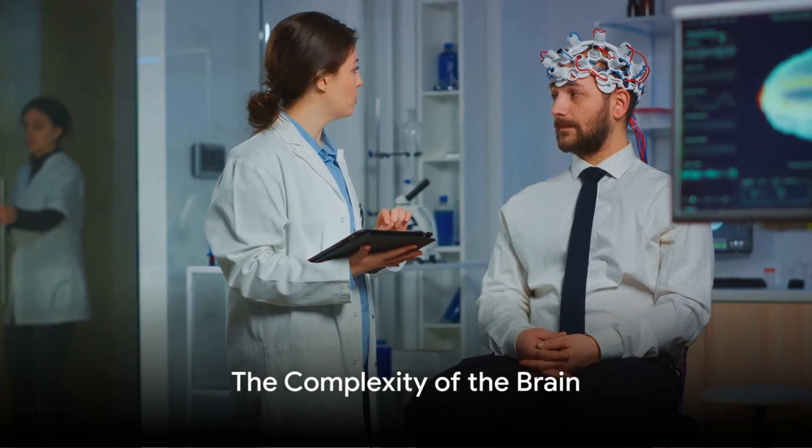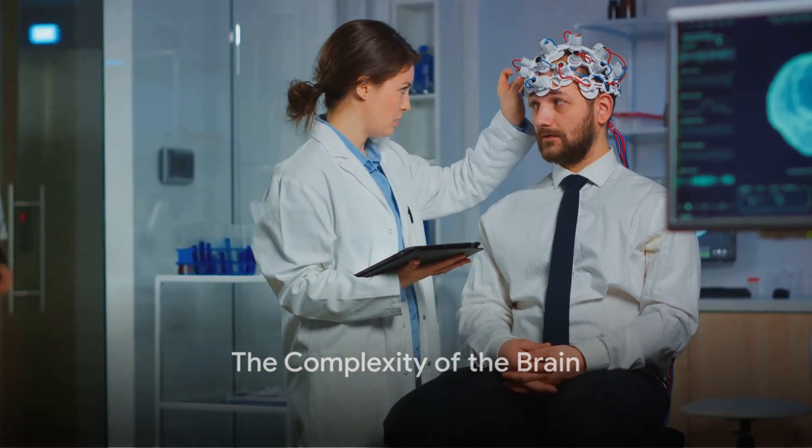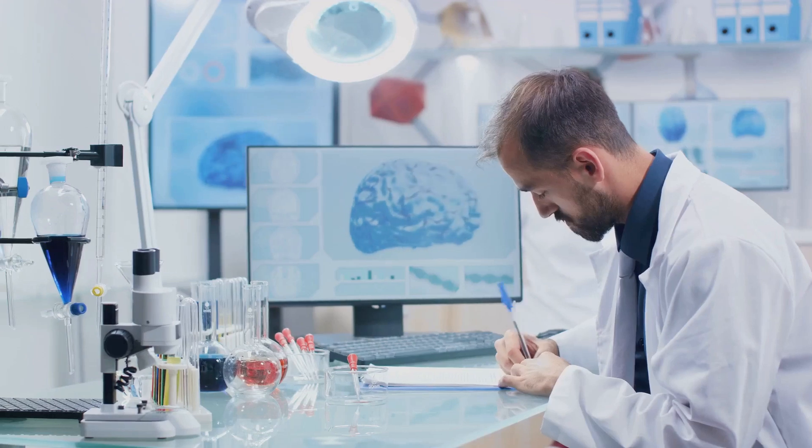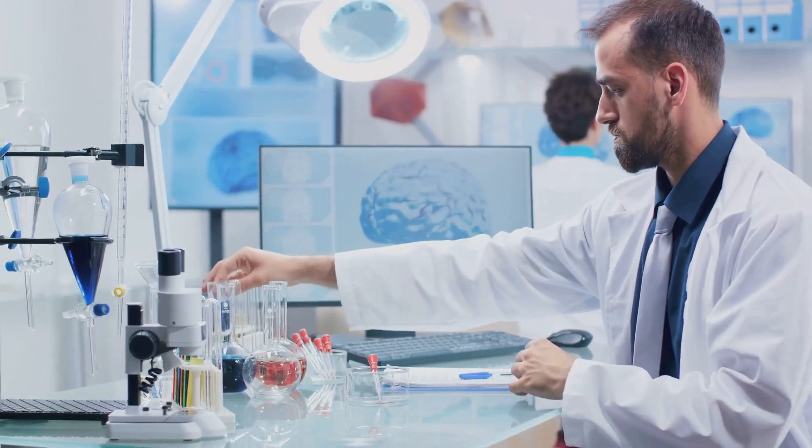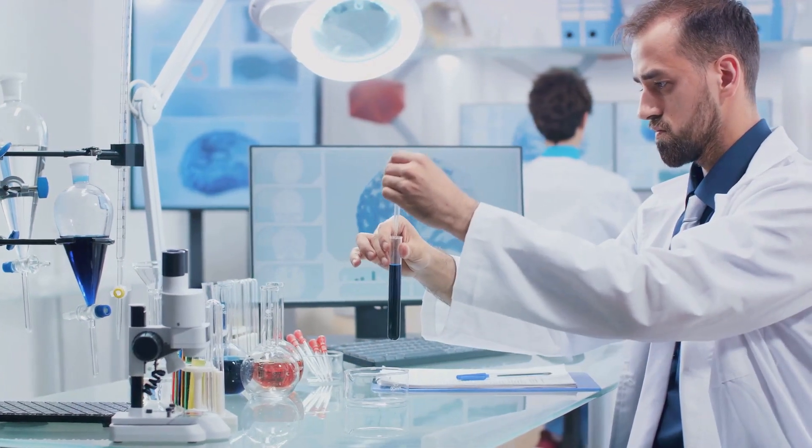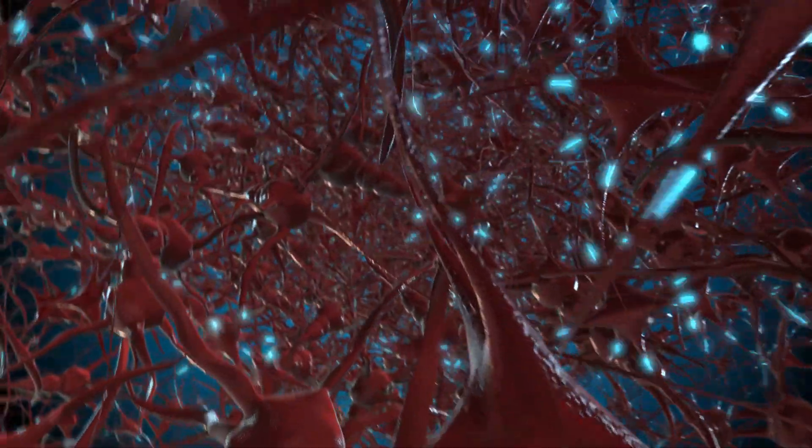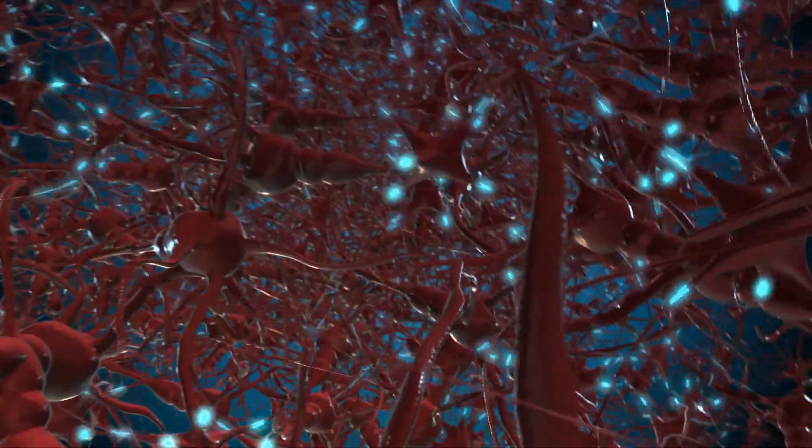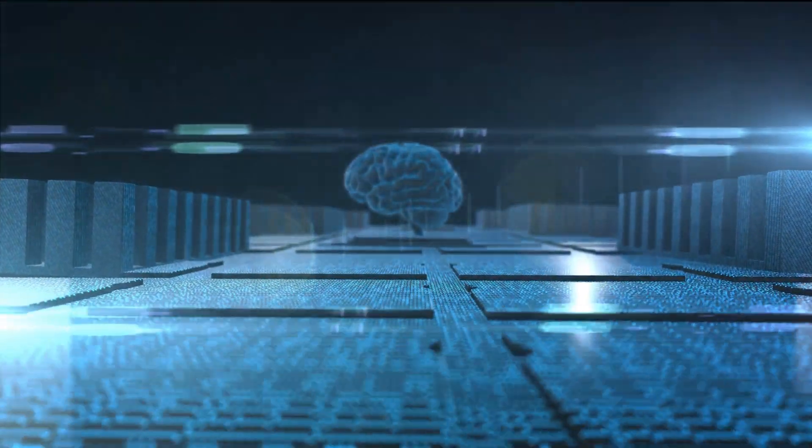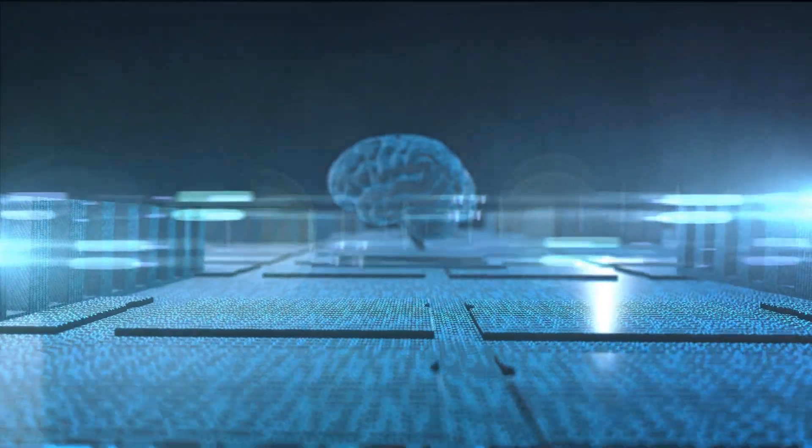The brain is a complex, non-linear system with billions of neurons interacting in myriad ways. It's not just about processing information, but also about how that information is stored and retrieved. In essence, the brain is an incredibly efficient self-learning system. Neuromorphic computing aims to emulate this efficiency and self-learning capability in machines.